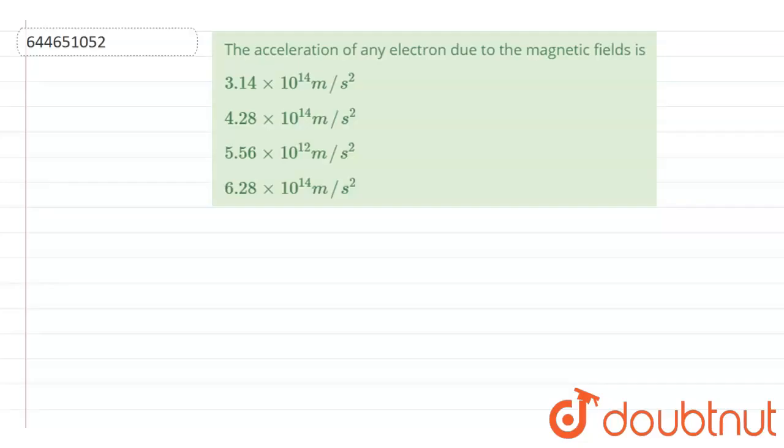Hello everyone, let's start the question. The question says that acceleration of any electron due to the magnetic field is. So they're asking us to find out acceleration of electron due to the magnetic field. So first of all, let's try to understand when there will be acceleration produced in an electron when it is projected in a magnetic field.